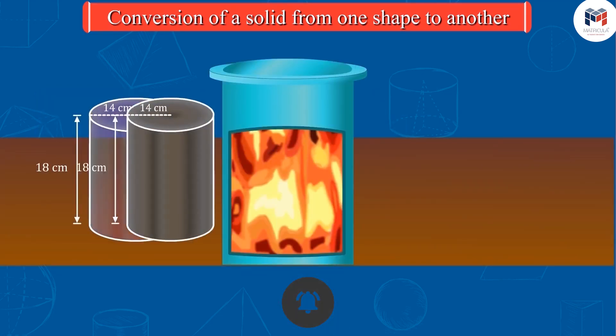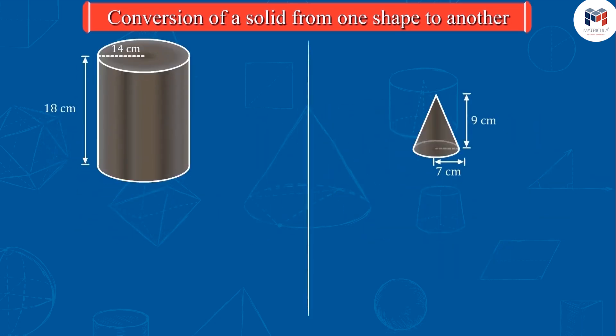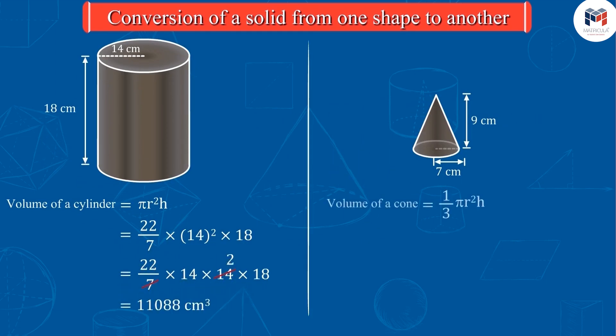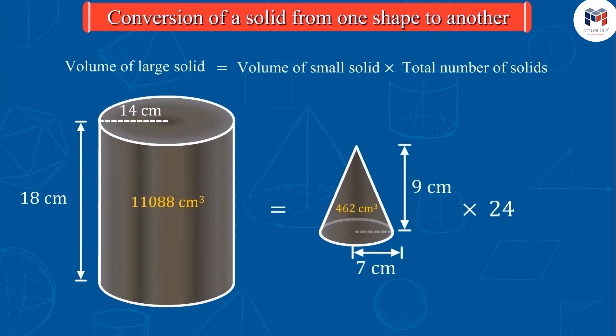If we melt this iron cylinder and make 24 cones of height 9 centimetres and radius 7 centimetres and then calculate their volumes, we will realise that this statement proves to be true even in this case.